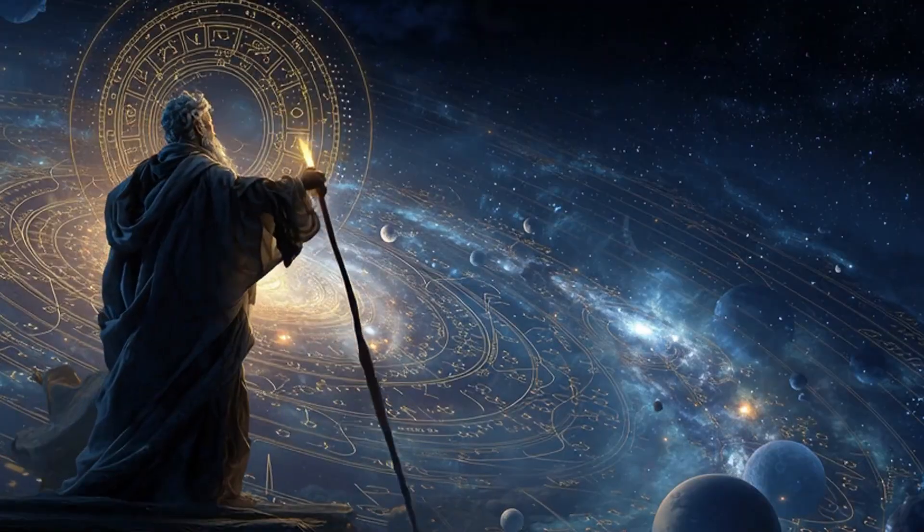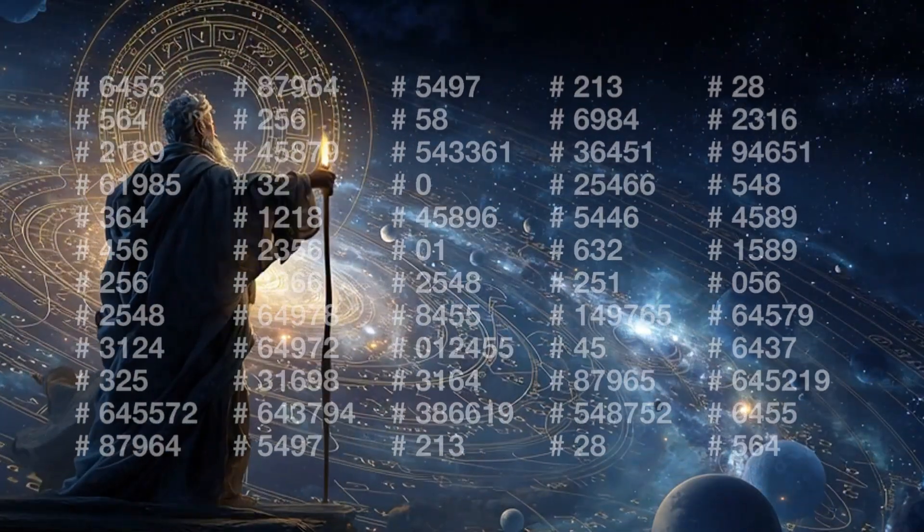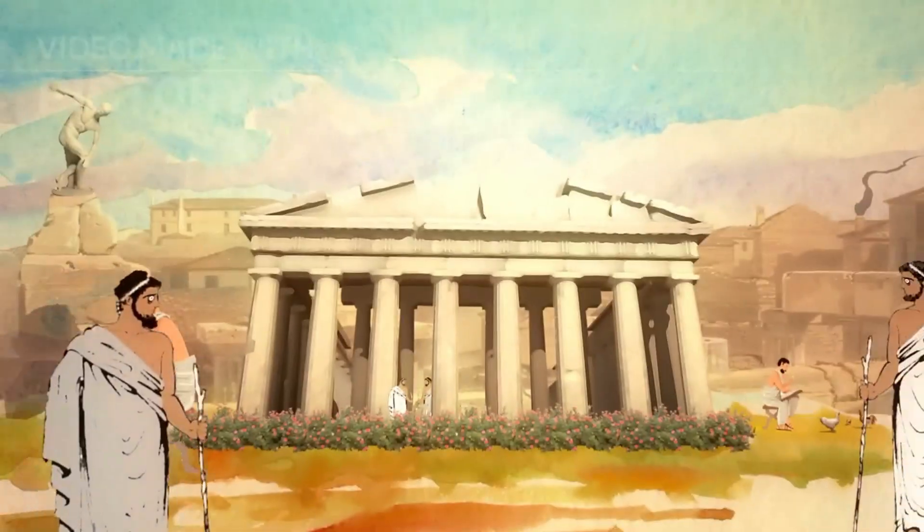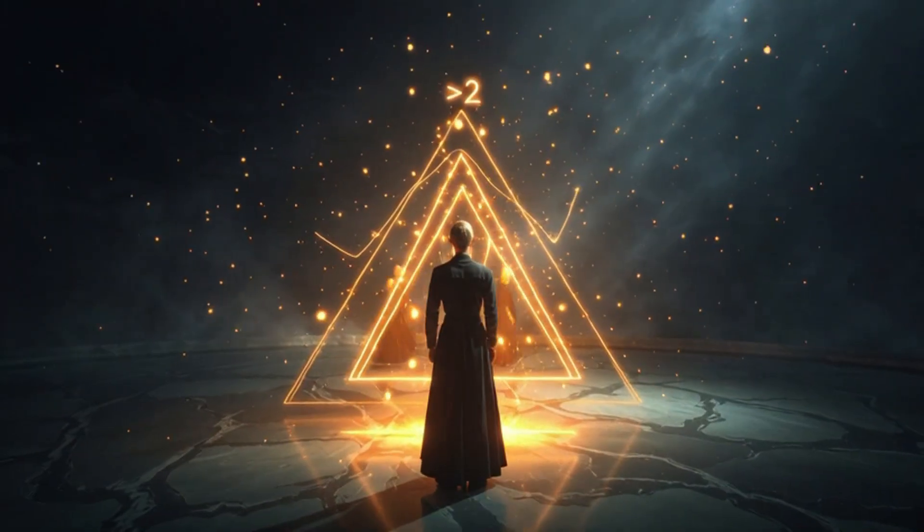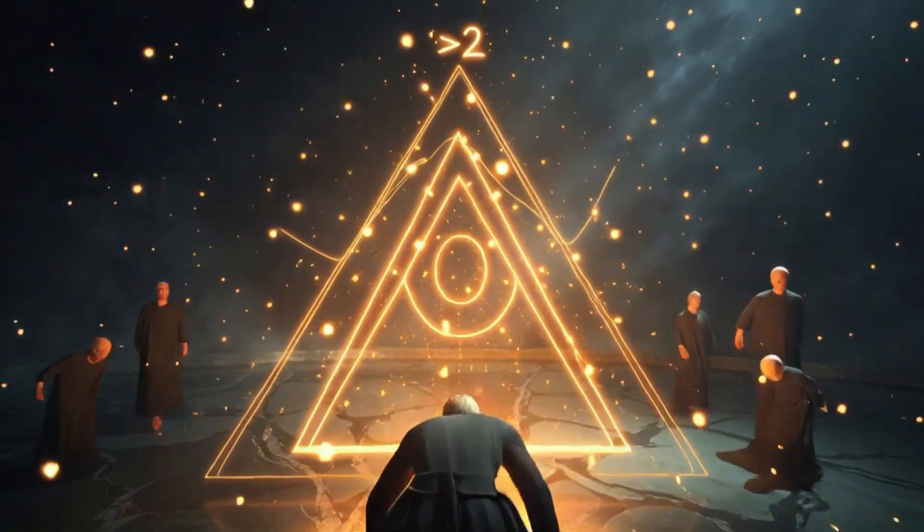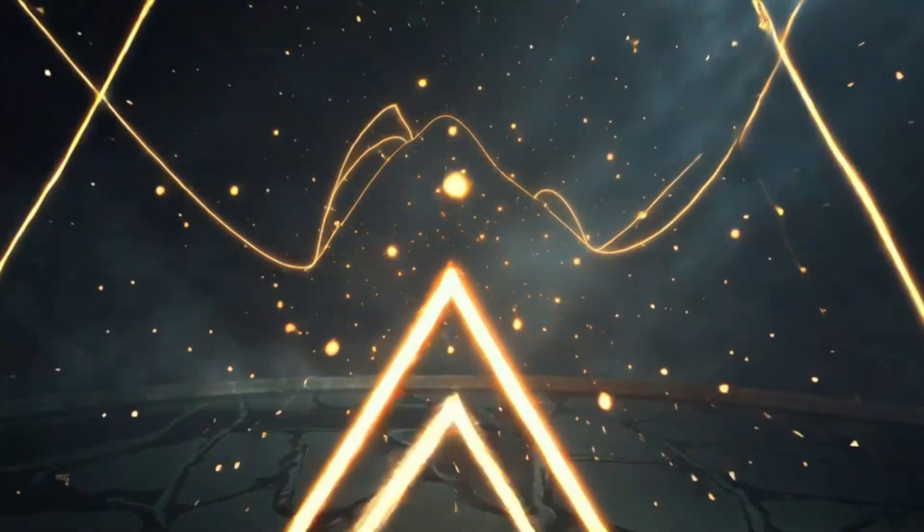Pythagoras believed everything in the universe could be expressed with whole numbers and perfect ratios. But then his students discovered something terrifying. The square root of two is irrational. It cannot be written as a fraction of whole numbers.